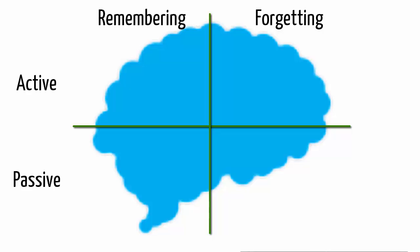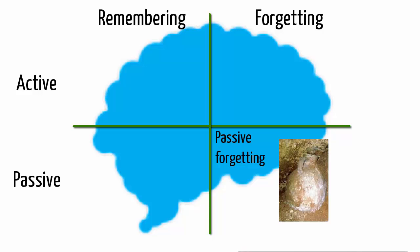Starting in the bottom right, or passive forgetting, we have articles there that were lost long ago, like a broken pot or a tablet. These items are not thought about again shortly after they disappear.